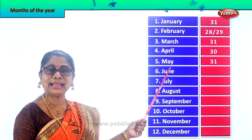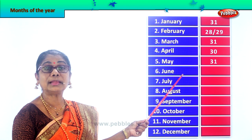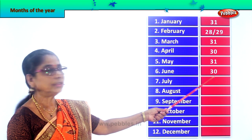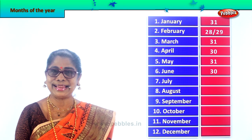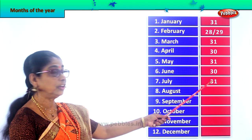Spell June — J-U-N-E, June. The month of June has 30 days. Next we have July. Spell July — J-U-L-Y, July. You are already in school and you are happy with your friends. The month of July has how many days, children? Look at your calendar and tell — 31 days.